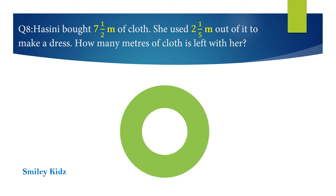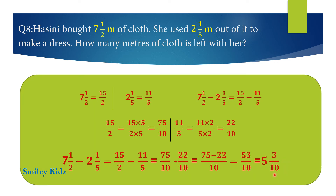And your time is up. The right answer is 5 and 3 by 10. Subtract 2 and 1 by 5 meters from 7 and 1 by 2 meters. 7 and 1 by 2 equals 15 by 2, and 2 and 1 by 5 equals 11 by 5. LCM of 2 and 5 is 10. 15 by 2 equals 75 by 10, and 11 by 5 equals 22 by 10.